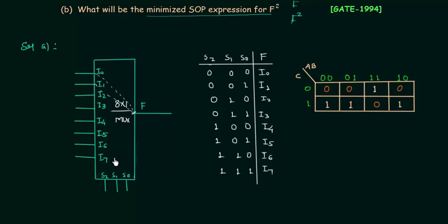We are using 8:1 MUX, so we have 3 select lines: S2, S1, and S0. We have 3 variables: A, B, and C. We must assign all three variables to the select lines. Let S2 equal C, S1 equal A, and S0 equal B. In the truth table, I will replace S2 by C, S1 by A, and S0 by B.